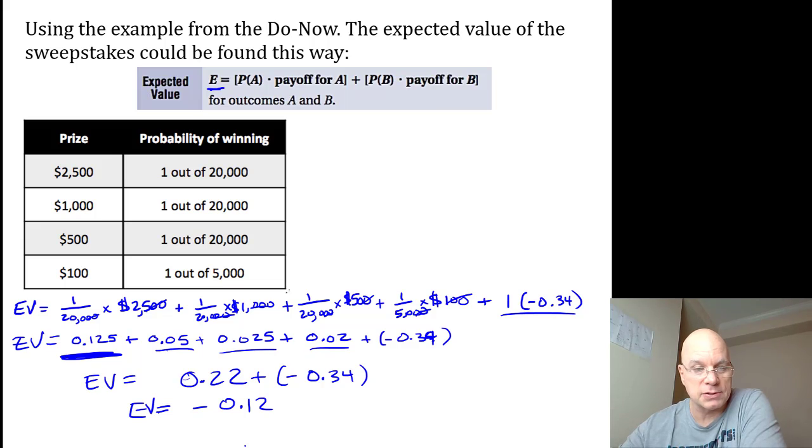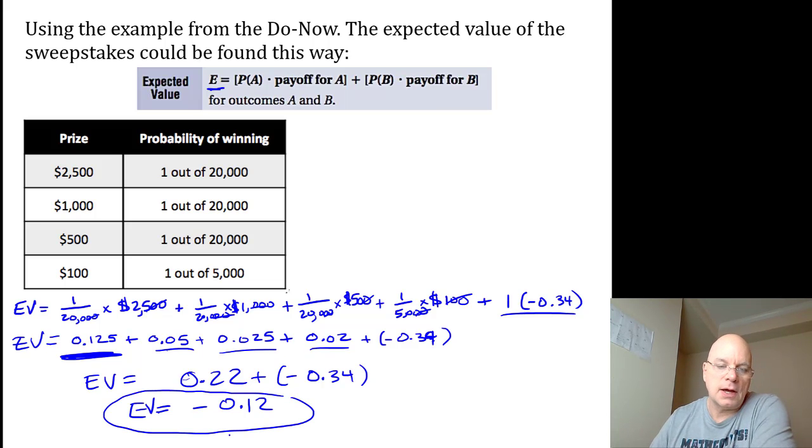Most people, almost every single person, loses 34 cents because they send in their postcard and never hear from it again. Only 7 people are winning any prizes at all, and some people are extremely happy they win some huge money prize. But when you average everything out, it's a weighted average. That's what expected value is. The expected value is negative 12 cents, so not a good deal.